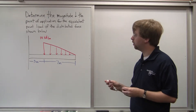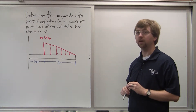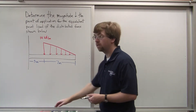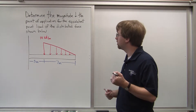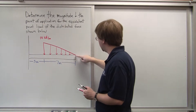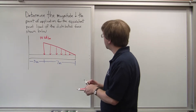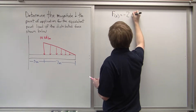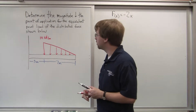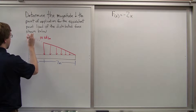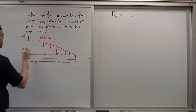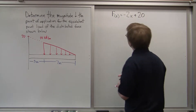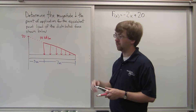The first thing we need to do is determine what the force function is — we need to come up with an equation that describes this line. Since it's a simple line, it's going to be something times X plus the Y-intercept. The slope, going from 14 down to 0 over the course of 7 meters, is negative 2. So F(x) equals negative 2X. If we find the Y-intercept, going 3 meters further back, it would be at 20 kN per meter. So F(x) = -2X + 20.